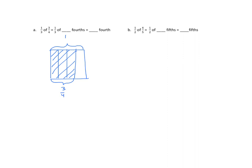Now we want one-third of that. So we're going to use horizontal lines to divide the same rectangle into thirds. We'll label this one-third and double-shade this portion. So what do we have? We have one-third times three-fourths equals three — three are double-shaded out of a total of twelve. So that equals three-twelfths.